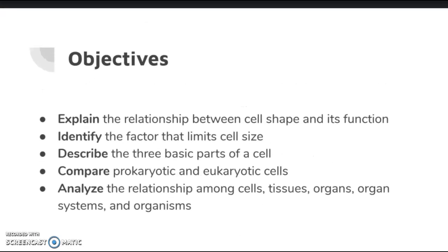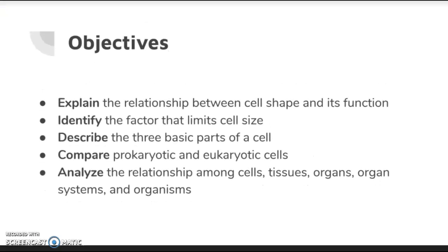The objectives are: to explain the relationship between cell shape and function, to identify factors that limit cell size, to describe the three basic parts of a cell, to compare prokaryotic and eukaryotic cells, and to analyze the relationship among cells, tissues, organs, organ systems, and organisms.